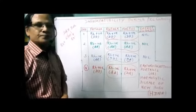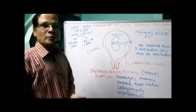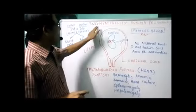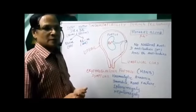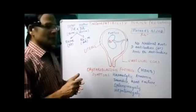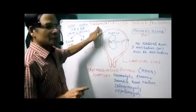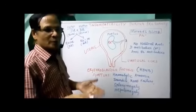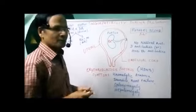I will explain this with a diagram. In one of the four marriages I mentioned, incompatibility occurs when the mother's blood and the fetal blood are not matchable — both are different. The mother's blood is different from the fetus.